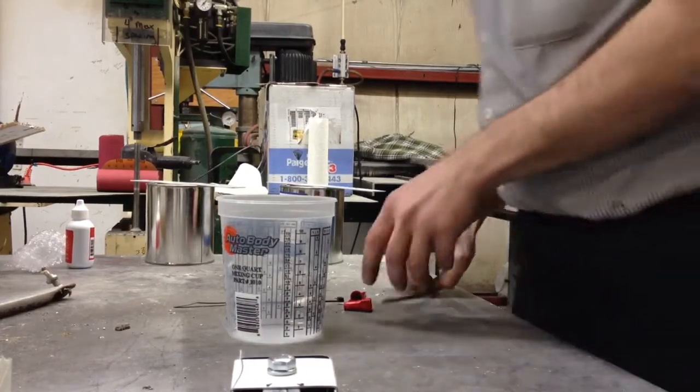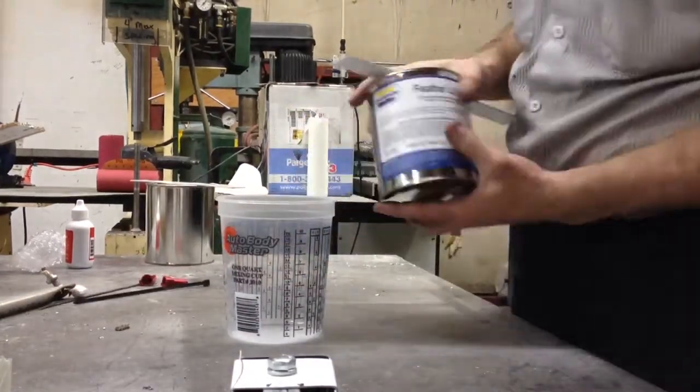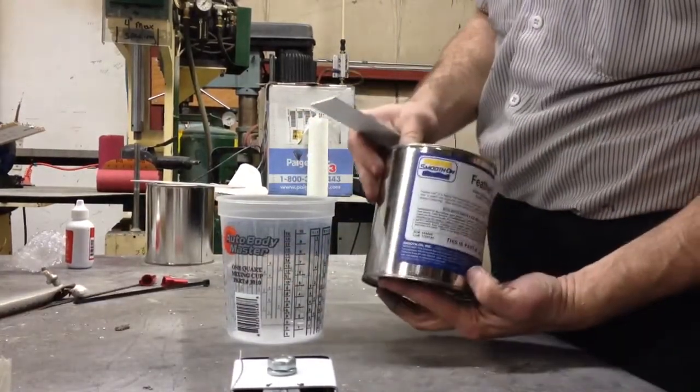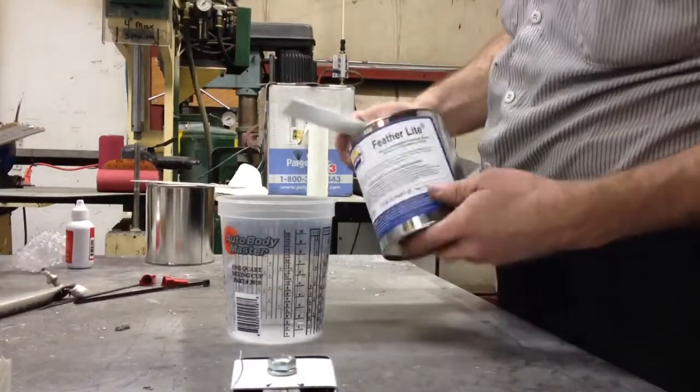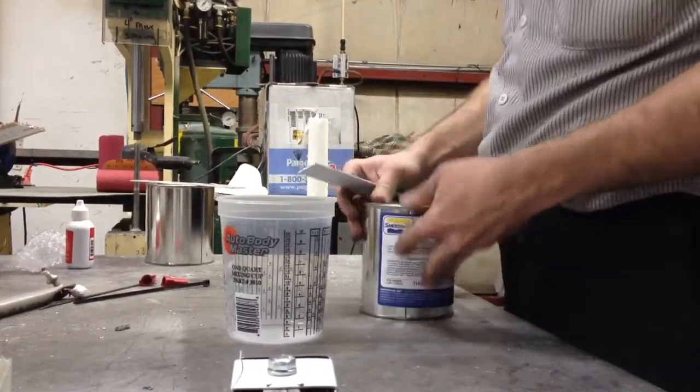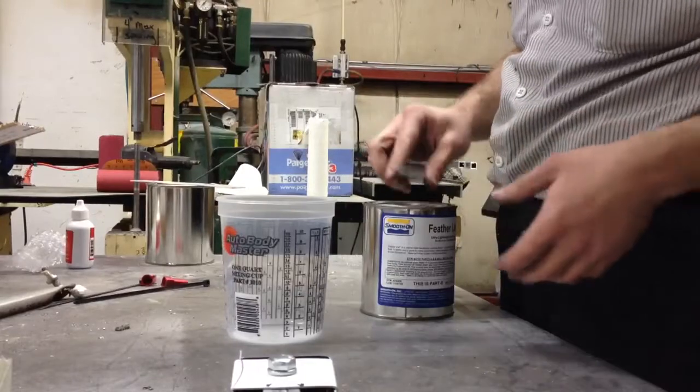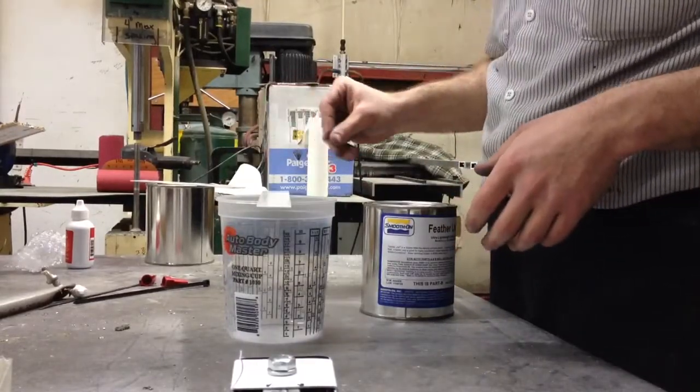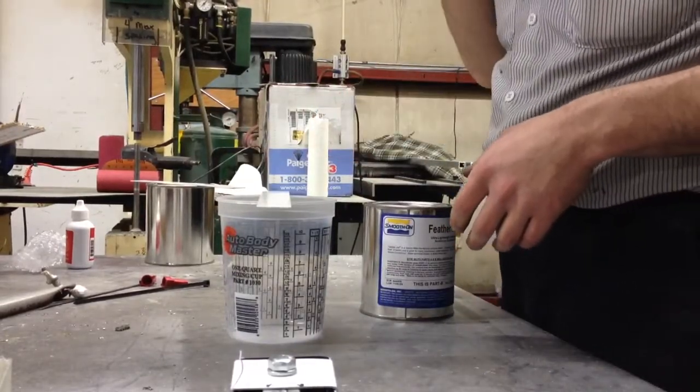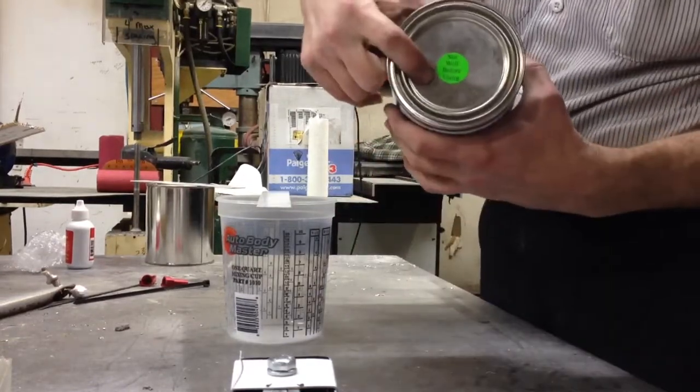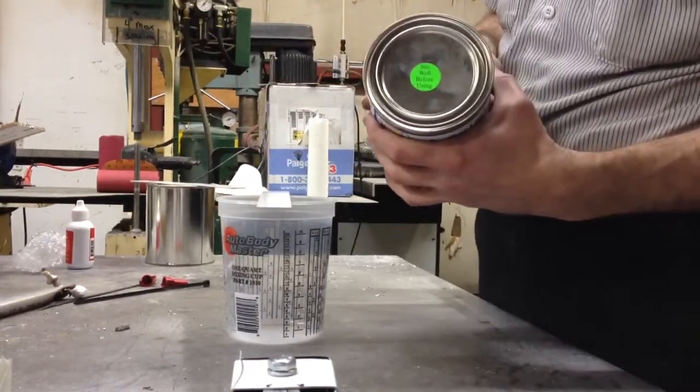I'm going to now test out the Featherlite product from Smooth-On. It is pretty light. It's in the can. It feels like it's lighter than water, which is what they insist the mixed product is. And they do insist to stir well both cans individually before using.